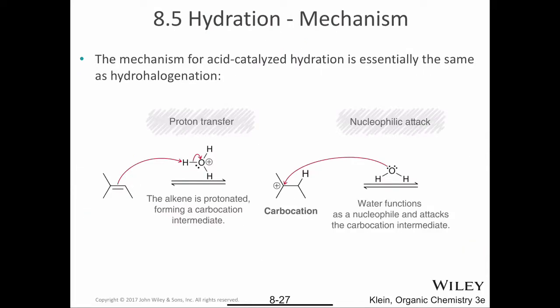Here's the acid-catalyzed hydration mechanism. The good news is it's basically the same as hydrohalogenation - when we added things like HCl or HBr or HI. If you understood that mechanism, this isn't much of a stretch. Instead of using sulfuric acid in water, we use hydronium as the acid. The Lewis structure shows our alkene behaving as a base, taking the proton from hydronium.